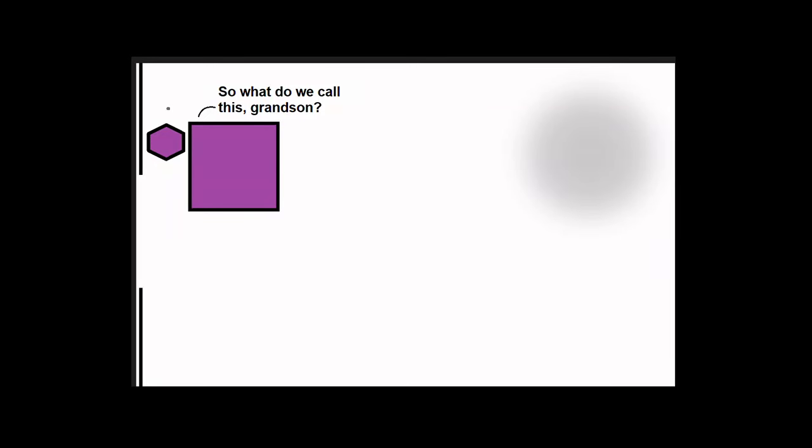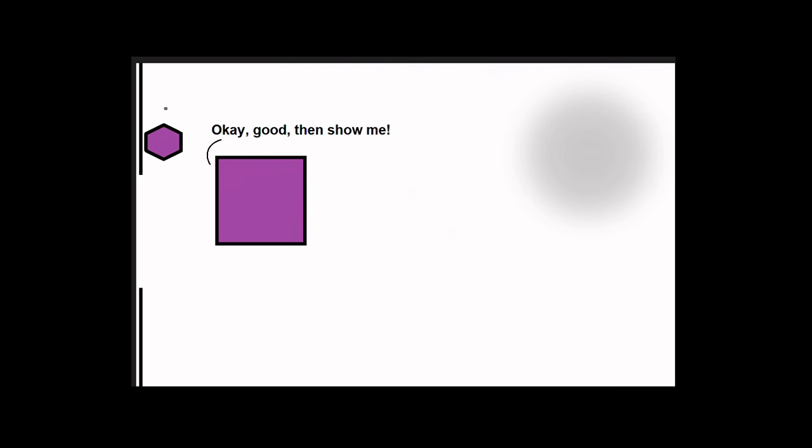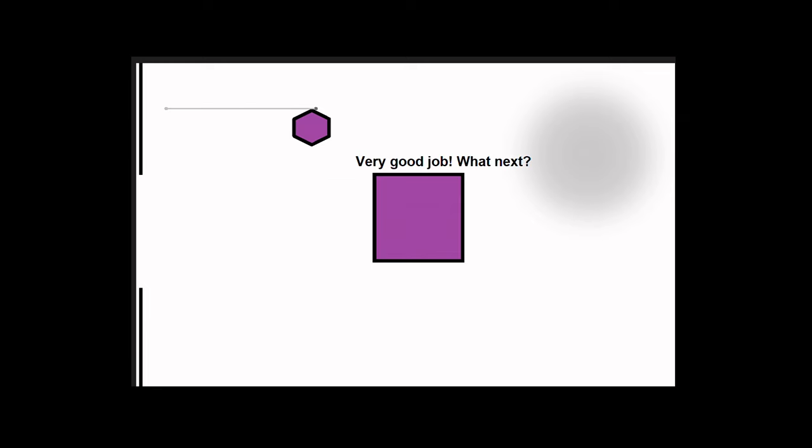So what do we call this, grandson? A point. That's right. And do you know what happens if we move a point parallel to itself? Yes. Okay, good. Then show me. Okay. If we move it this way, we make a line. Very good job.